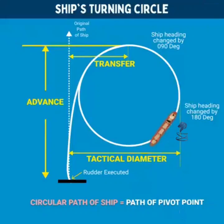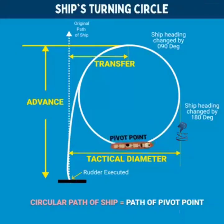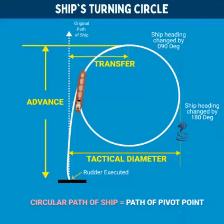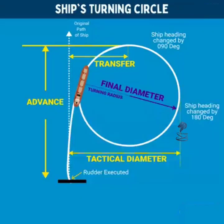The circular path traversed by the ship is the path of its pivot point. Once the ship continues to travel in a circular path, the radius of the circle is called the turning radius and the diameter is called the final diameter.